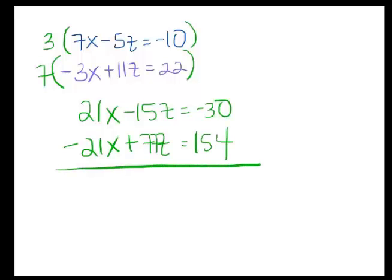So now when I add those together, my 21x's cancel. 77 minus 15, that's 62z equals 124. So then if I divide both sides by 62, I get that z equals 2.